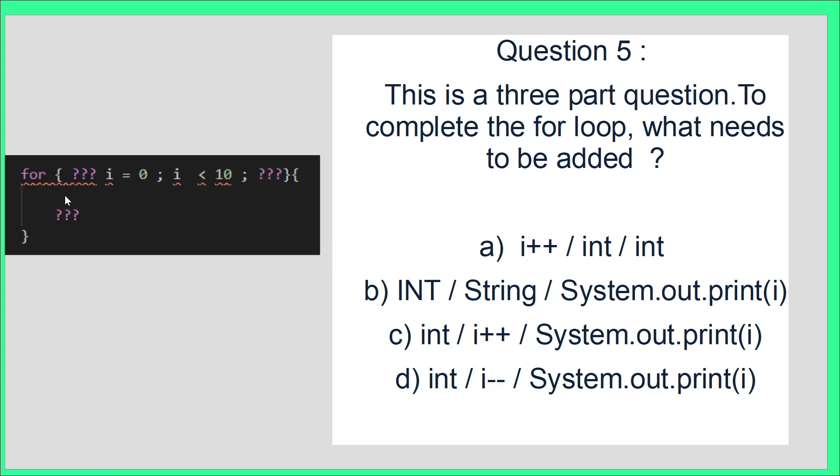Question 5 is checking your understanding of a for loop. It's a three-part question where you have to identify which is the right answer. The answer is C. You need to declare the data type of the variable, declare what happens after each loop, and declare what happens within that for loop code. If you're unsure why C is the correct answer, please have a look at the video on for loops.